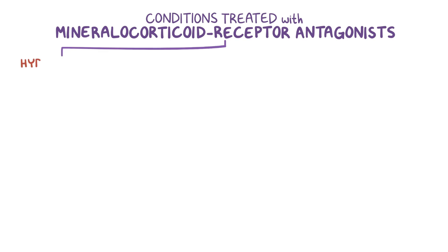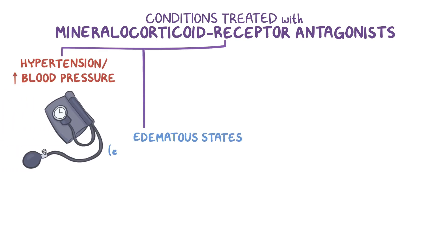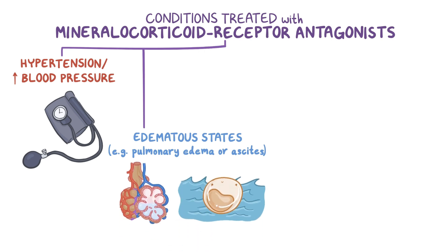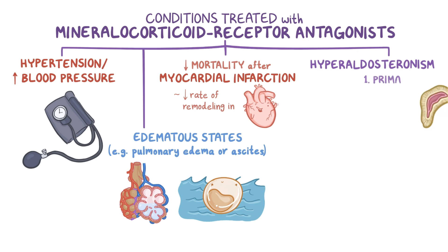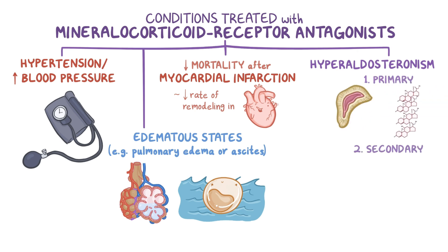Common conditions treated with mineralocorticoid receptor antagonists include hypertension and edematous states like pulmonary edema or ascites, where fluid builds up in the extracellular space. They have also been proven to reduce mortality after a myocardial infarction, presumably by reducing cardiac remodeling. Another condition where we want to antagonize aldosterone is hyperaldosteronism, which can be primary — where too much aldosterone is secreted by the adrenal cortex itself — or secondary, when high aldosterone levels result from activation of the renin-angiotensin-aldosterone system.